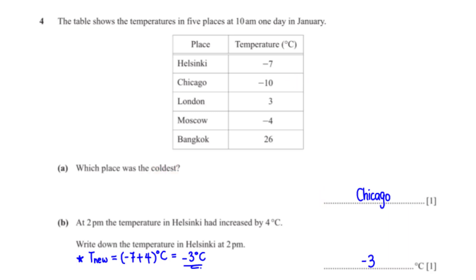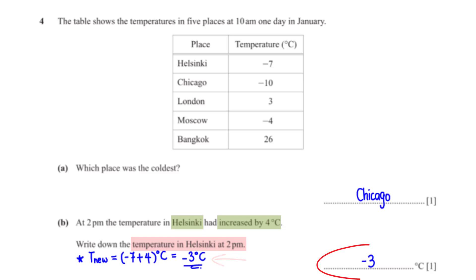At 2 p.m., the temperature in Helsinki had increased by 4 degrees Celsius. To find the temperature in Helsinki at 2 p.m., we add 4 degrees Celsius to the previous temperature, which is negative 7 degrees Celsius, and this leaves us with negative 3 degrees Celsius.